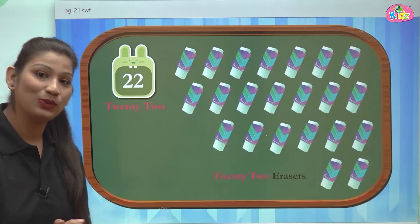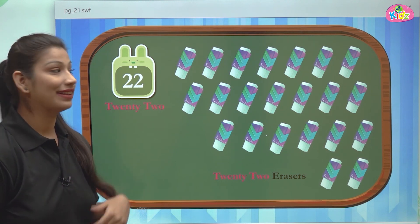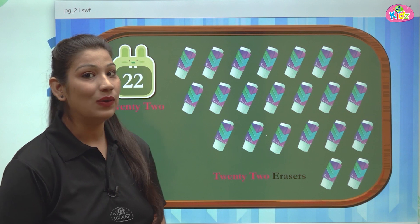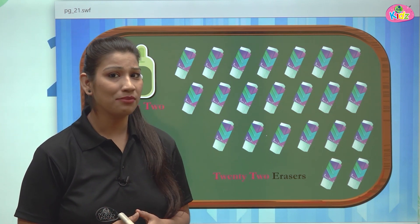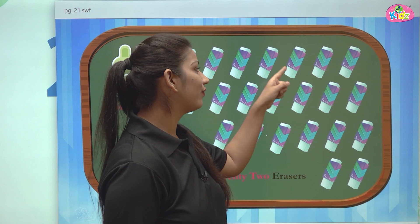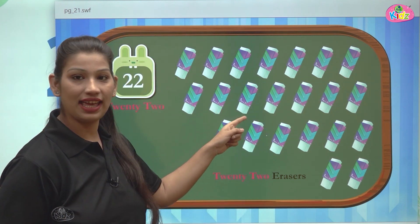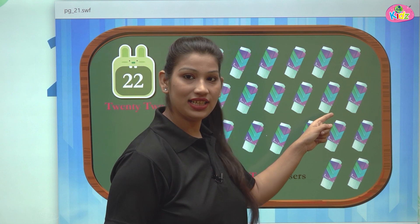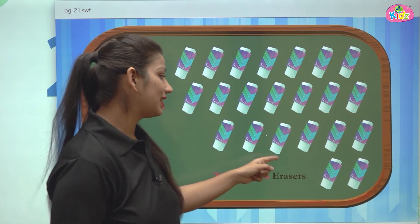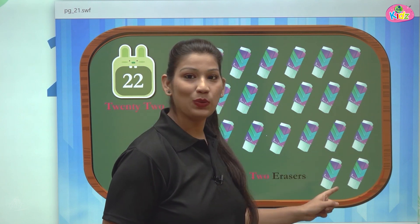22 — here we can see erasers. Let us count — are they 22 in number? 1, 2, 3, 4, 5, 6, 7, 8, 9, 10, 11, 12, 13, 14, 15, 16, 17, 18, 19, 20, 21...